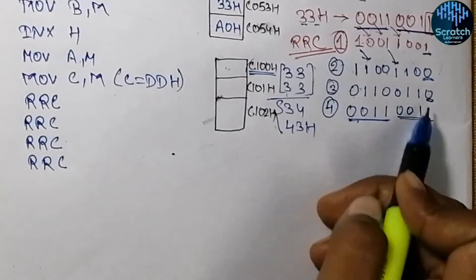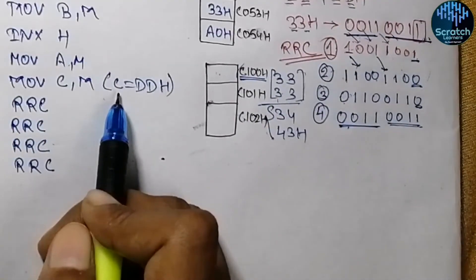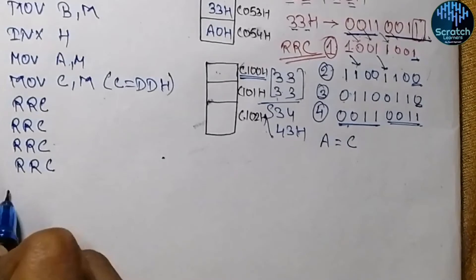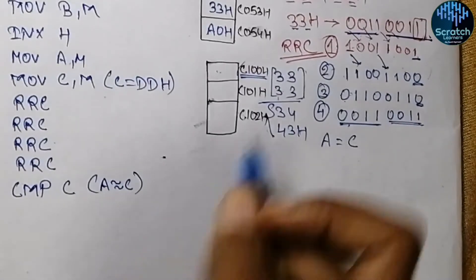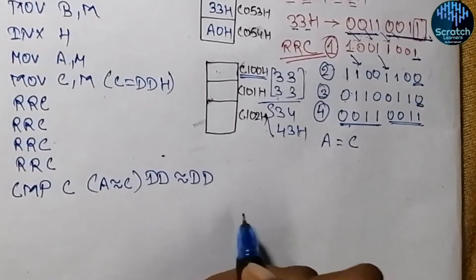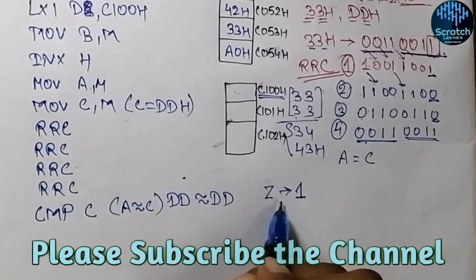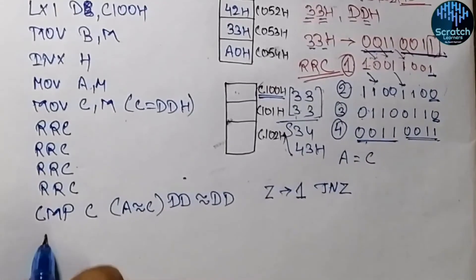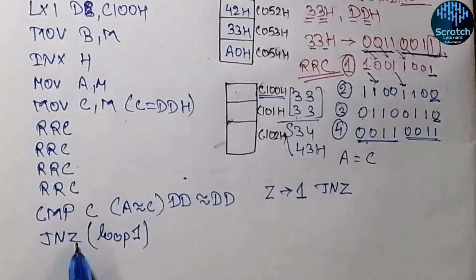After rotation, the result is in the accumulator. We then compare it with the original data stored in register C using CMP C. If both nibbles were equal, a zero flag is set to one. We use JNZ Loop1 — jump if no zero — so if the zero flag is not set we jump past the store instruction.